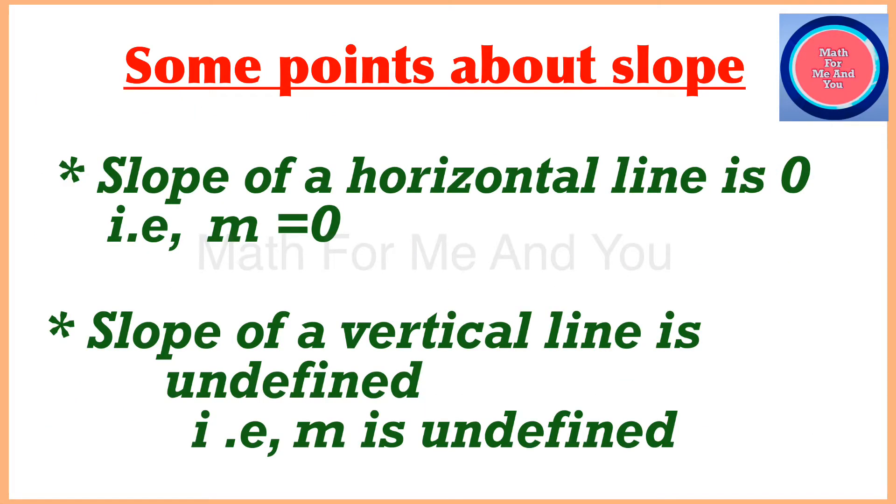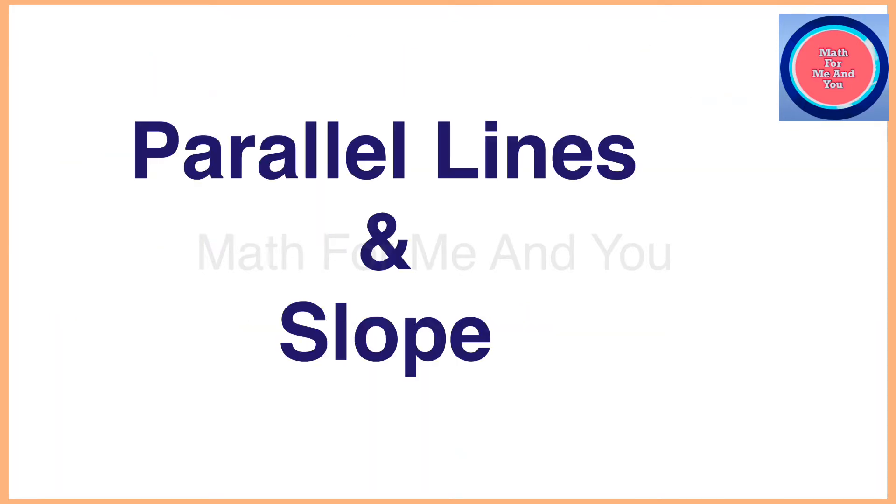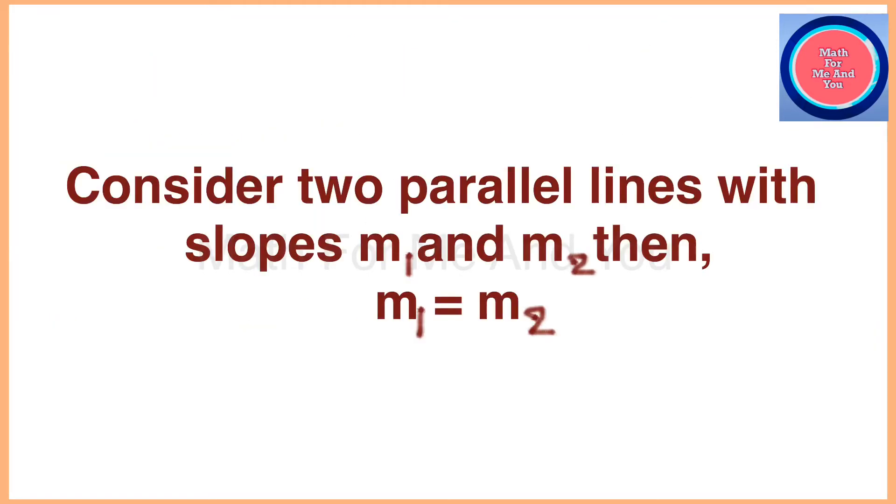It is often denoted with the letter m. Some points about slope: slope of a horizontal line is 0, that is m = 0. Slope of a vertical line is undefined. Parallel lines and slope: consider two parallel lines with the slope m1 and m2.